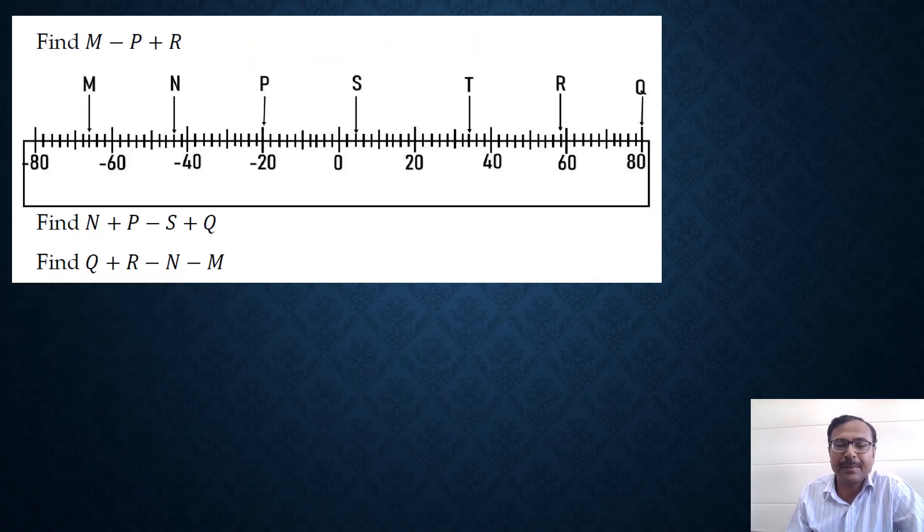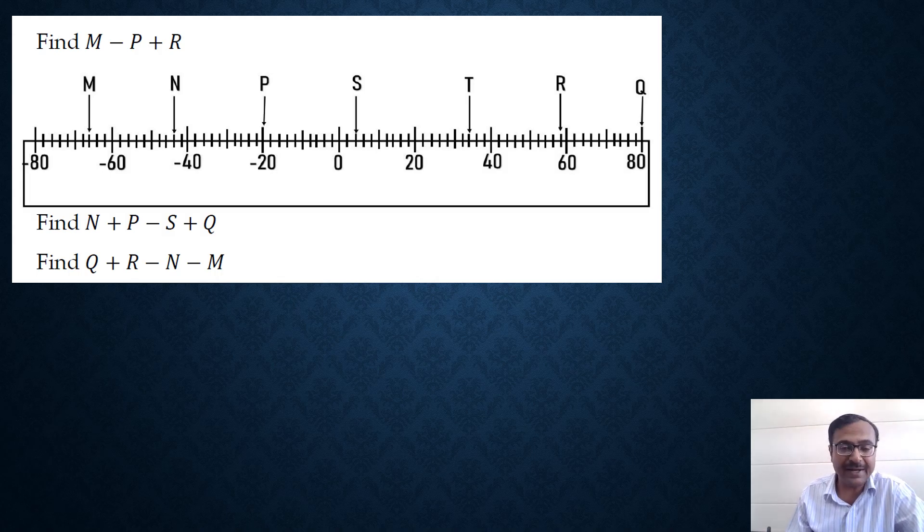Let's see a question of data - reading the data and then finding something. If you look at it carefully, you have a scale there. In the middle you have 0. On the right hand side you have 20, 40, 60, and 80. On the left hand side you have minus 20, minus 40, minus 60, and minus 80. You can see some alphabets written there: M, N, P, S, T, R, and Q. All these alphabets correspond to a particular integer on the scale.